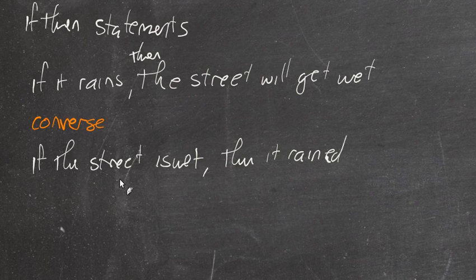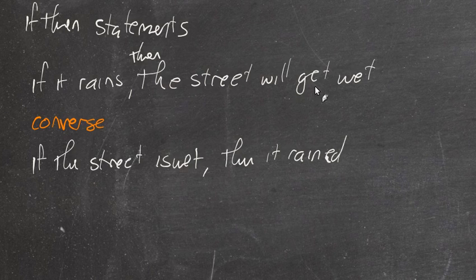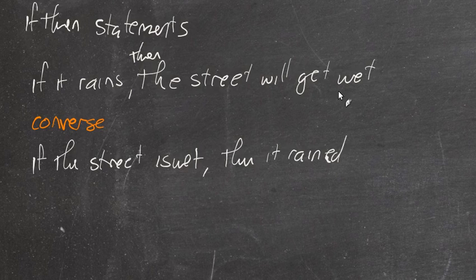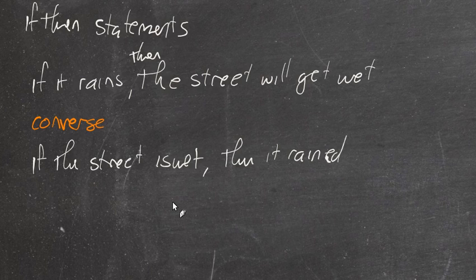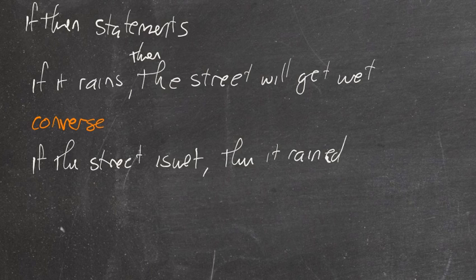So the converse isn't always true. Then you have something called the inverse and the contrapositive, but this is the main thing. The assumption often is that it works the other way, and it doesn't always. Though sometimes it does. Sometimes they both imply each other. But that's it for the introduction. We'll do a few sample problems of what's a rational number, what's a whole number, and those kinds of things. So thanks for watching.